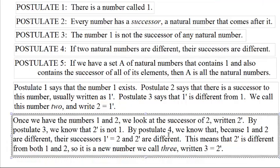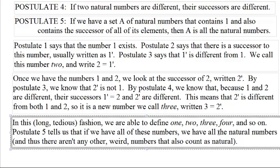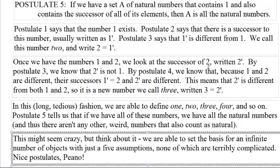The number that comes after 2 is called 3. In this long and very tedious fashion, we are able to define 1, 2, 3, 4, and so on. Postulate 5 tells us that if we have all these numbers, then we have all the natural numbers — there aren't any weird other numbers out there that also count as natural numbers. We are able to set the basis for an infinite number of objects with just 5 assumptions, none of which are terribly complicated. Nice postulates, Peano.